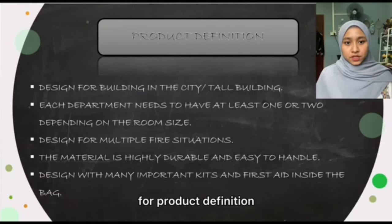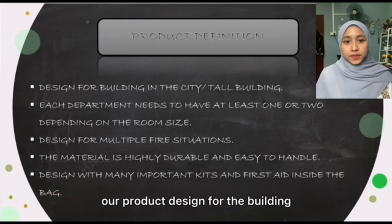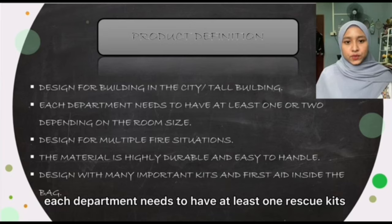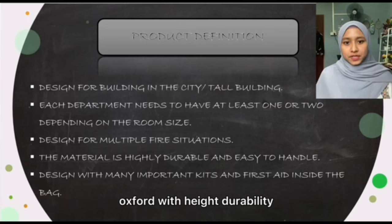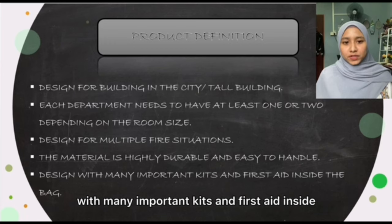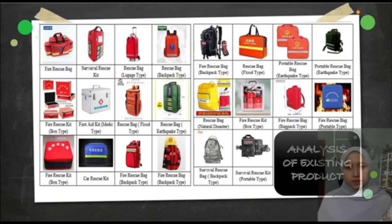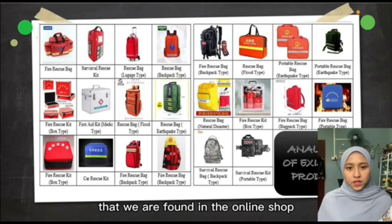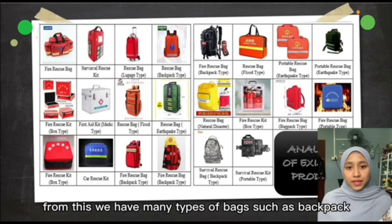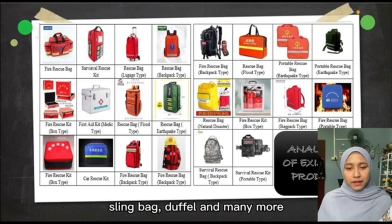For the product definition, our product is designed for buildings. Each department needs to have at least one rescue kit. The material used is strong and offers high durability, and is also easy to handle. We designed the bag with many important kits and first aid items inside. This is an analysis of existing products found in online shops. From this, we found many types of bags such as backpack, sling bag, duffel, and many more.